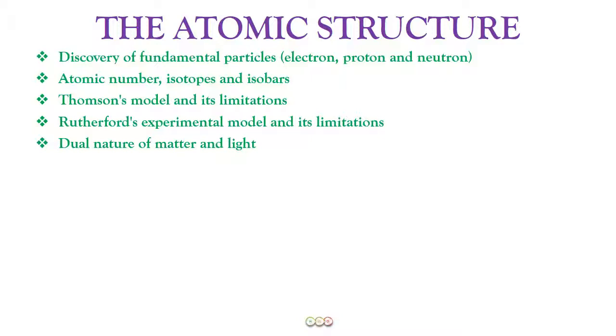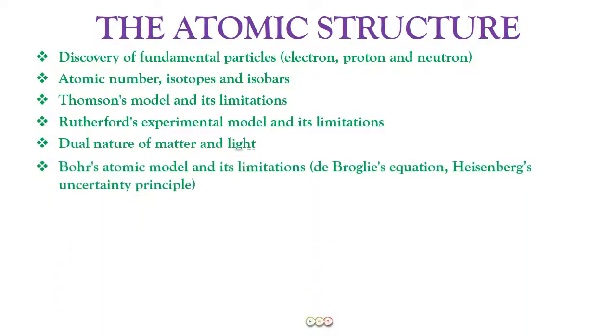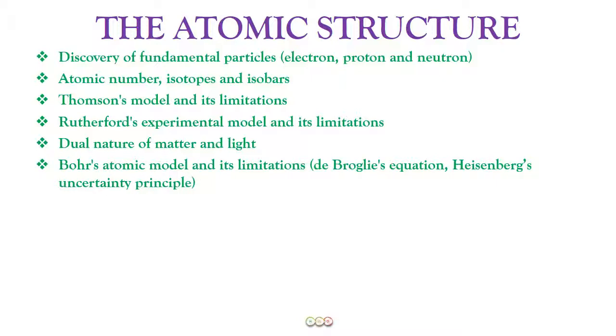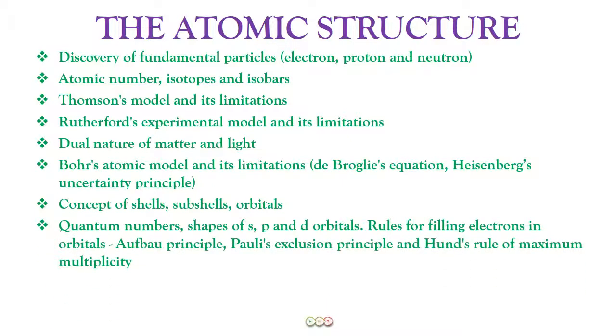Then all the scientists, whoever contributed to the structure of the atom, we are going to discuss them all in detail. So we would be discussing Thomson's model and its limitations, then came the Rutherford experimental model and its limitations. Then we would be discussing the dual nature of matter and light, Bohr's atomic model and its limitations. Along with that, we would be discussing the de Broglie equation, the Heisenberg's uncertainty principle.